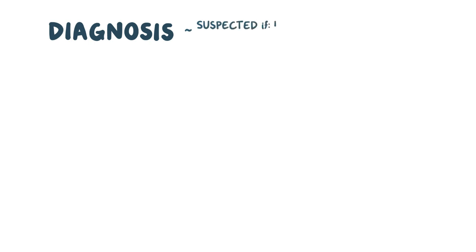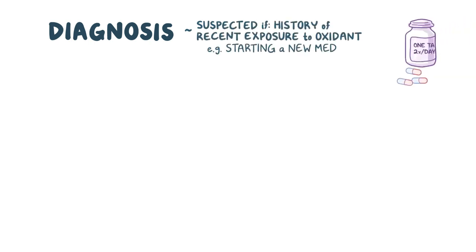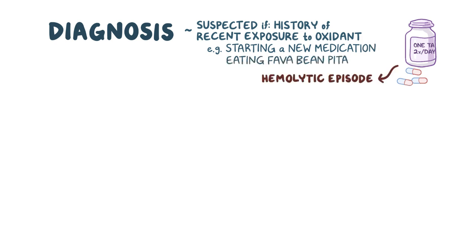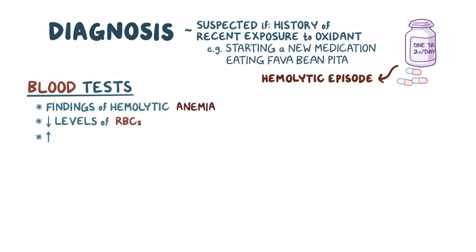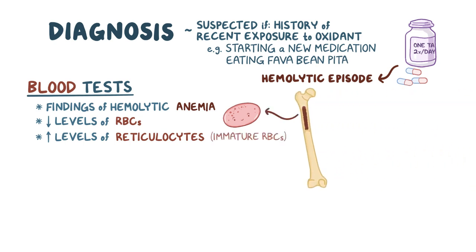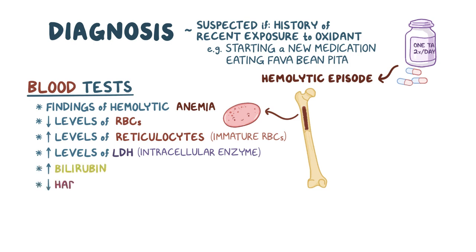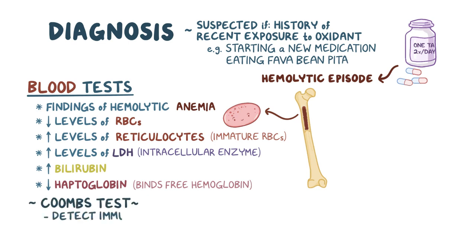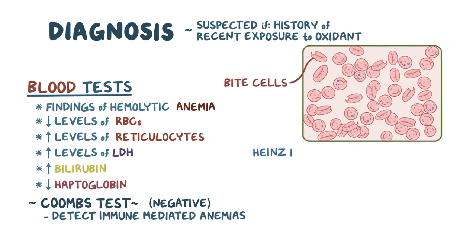The diagnosis can be suspected if there's a history of recent exposure to an oxidant, like starting a new medication or eating a fava bean pita, followed by a hemolytic episode. Blood tests will show findings of hemolytic anemia, like low levels of red blood cells and increased levels of reticulocytes, which are immature red blood cells made by the bone marrow in an attempt to keep up with the red blood cell loss. Also there will be high levels of lactate dehydrogenase or LDH, which is an intracellular enzyme released into the blood. Next, there's high bilirubin and low haptoglobin, which is a molecule that binds free hemoglobin in the blood. Also, the Coombs test, used to detect immune-mediated anemias, will be negative. The blood smear will show bite cells and Heinz bodies that are characteristic of G6PD deficiency, and can be visualized with a special Heinz stain as dark intracellular inclusions within the red blood cells.